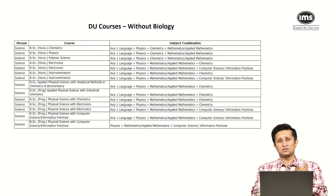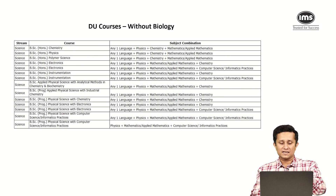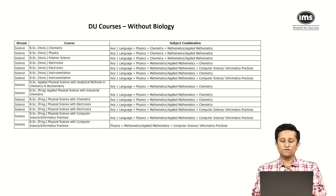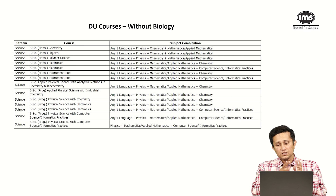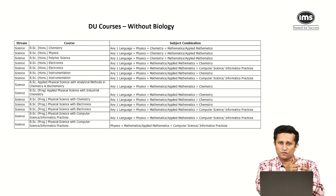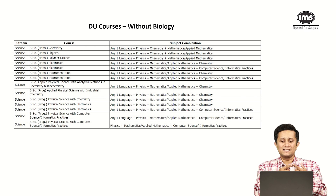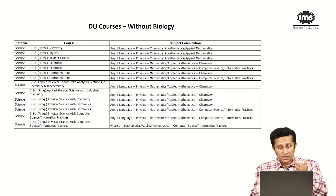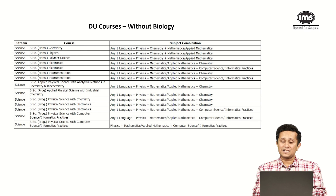If you go on to the computer side, look at all these courses: electronics, instrumentation, physical science with electronics, physical science with computer science. You have two options there. You need to select physics and you need to select maths — these two are definite — but your optional becomes either chemistry or computer science. So just as with biochemistry where chemistry and maths were fixed but physics was optional, here physics and maths are fixed, but you can select between either chemistry or computer science. It applies to electronics, instrumentation, and all your computer science based programs.